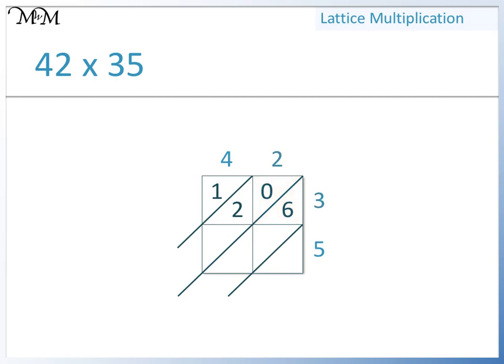Now we'll multiply 4 by 5. 4 times 5 equals 20. We write the 0 here and the 2 here. Finally, we multiply 2 by 5. 2 times 5 equals 10. We write the 0 here and the 1 here.